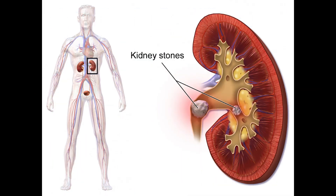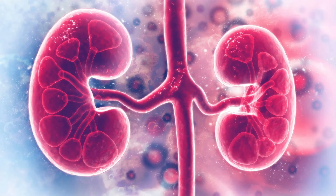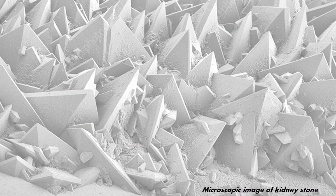Smaller stones may pass out of the body unnoticed in urine, whereas larger stones or stone fragments that pass into the ureter may cause severe back pain, nausea, vomiting, frequent painful urination, and sometimes blood in the urine.